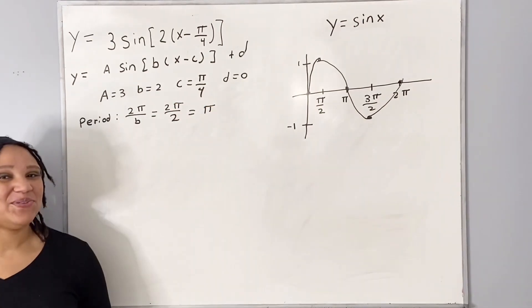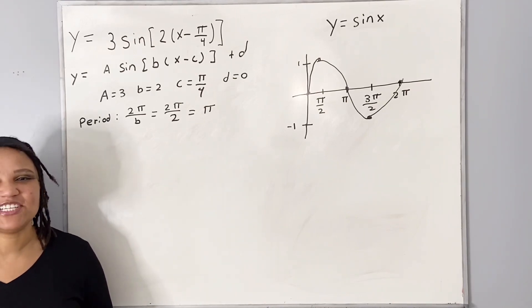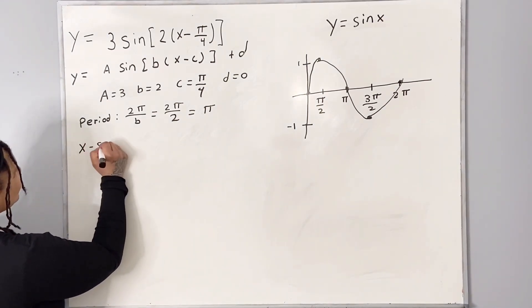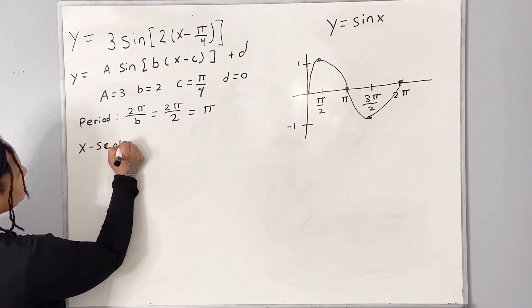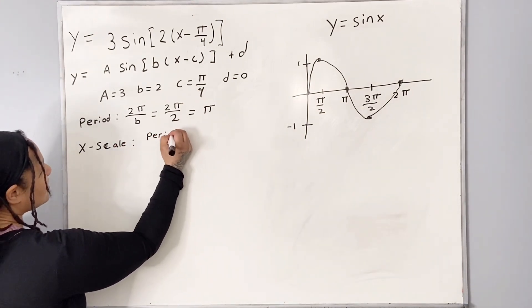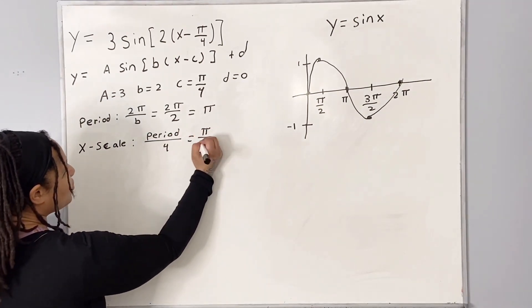So now we need to figure out our x scale. This is where some of my students may run into a little bit of a challenge, so be sure to take note. So our x scale is going to be period over 4, which is equal to pi over 4.